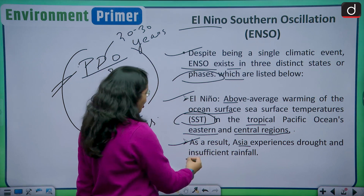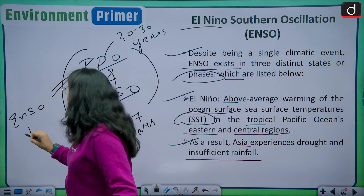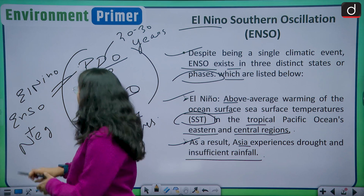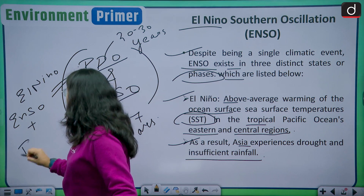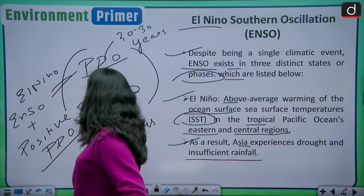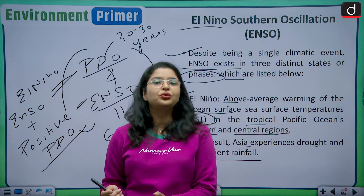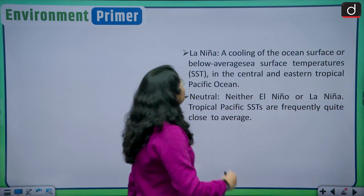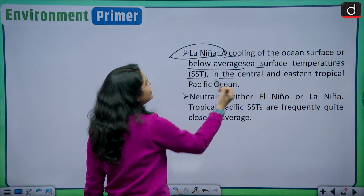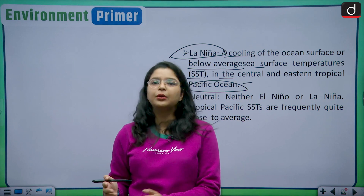As a result of El Niño, Asia experiences drought and insufficient rainfall. El Niño plus positive PDO is not good for Indian monsoons — we witnessed decreased monsoon this year due to the El Niño effect. Moving to the La Niña phase: this involves cooling of the ocean surface, or below-average sea surface temperatures in the central and eastern tropical Pacific Ocean, and this La Niña phase is very good for Indian monsoons.